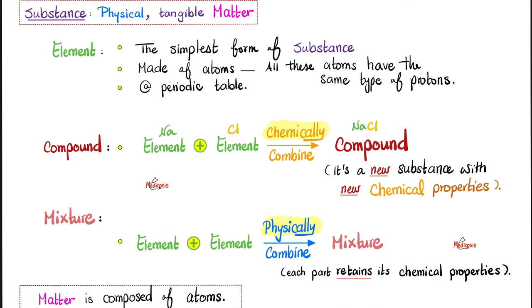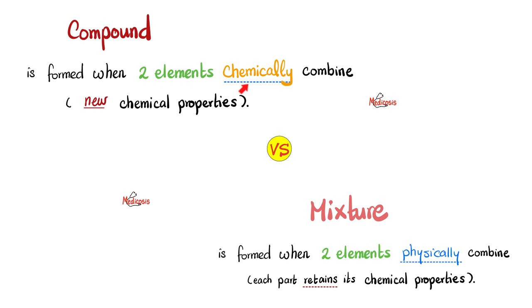What is matter made of? It's made of atoms — and that will be the topic of the next video: the atomic theory of matter. We'll talk about the atom, nucleus, electron, proton, neutron, cations, anions, and so on. Again, when we combine two elements chemically with new properties, that's a compound. But when you combine them physically and they retain the old properties, that's a mixture.